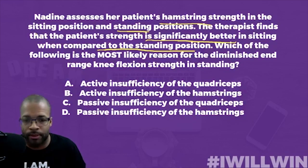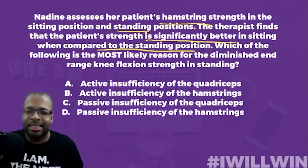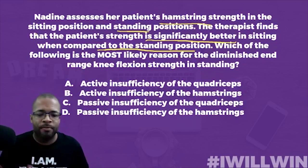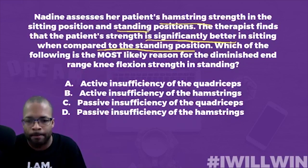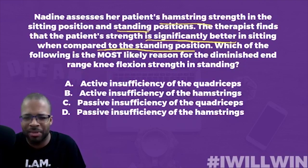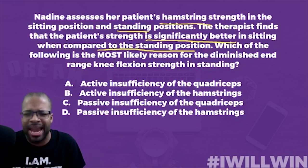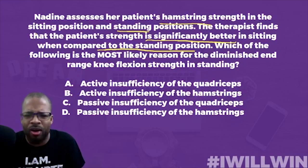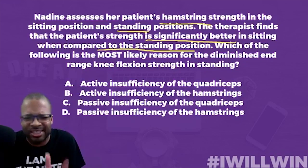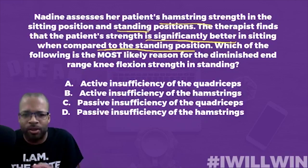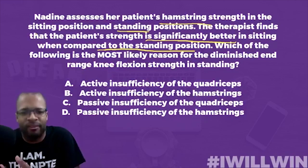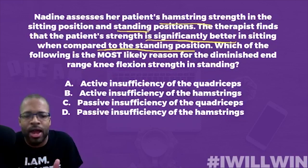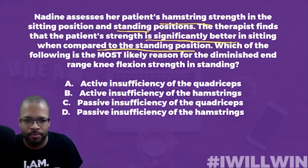Now we can dissect the answer choices. Answer A: active insufficiency of the quads. Ask yourself — is it because the quads are too short to generate enough strength? That's the reason for diminished end-range knee flexion strength? No — we're talking about the hamstrings here; quad contraction has nothing to do with this. We can eliminate A.